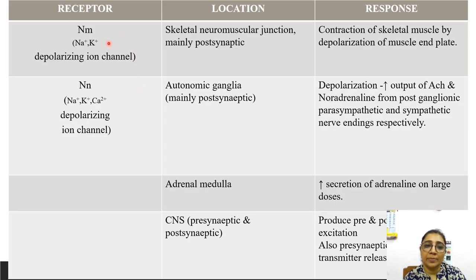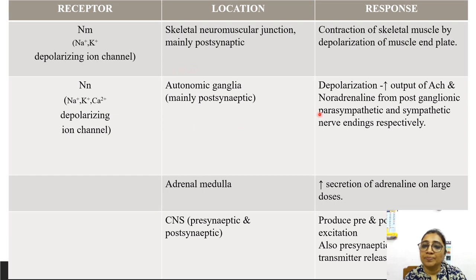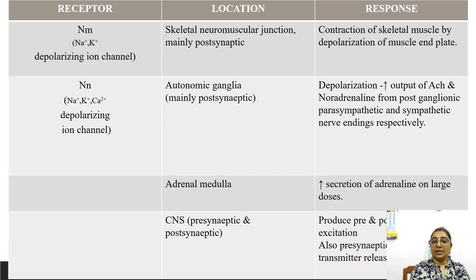Nm receptors are sodium/potassium depolarizing ion channels located at the skeletal neuromuscular junction, mainly post-synaptically; their response is contraction of skeletal muscle by depolarization of the motor end plate. Nn receptors are sodium/potassium/calcium depolarizing ion channels present at autonomic ganglia, mainly post-synaptically; membrane depolarization causes increased outflow of acetylcholine and increased noradrenaline release from post-ganglionic parasympathetic and sympathetic neurons. The adrenal medulla releases adrenaline, and at large doses there is pre- and post-synaptic excitement and pre-synaptic neurotransmitter release.